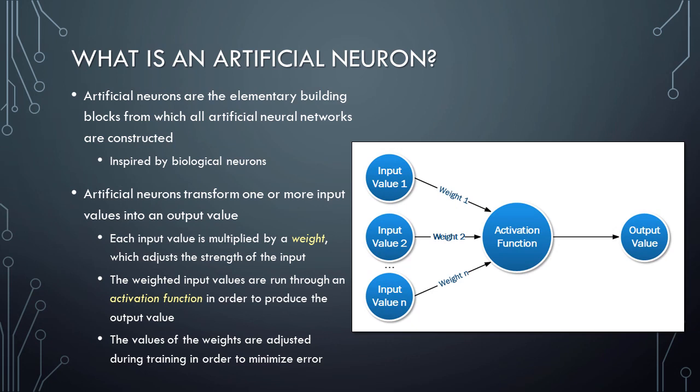Before we can understand artificial neural networks and how they work, we'll first need to learn about artificial neurons and activation functions. What is an artificial neuron? Artificial neurons are the elementary building blocks from which all artificial neural networks are built. They were first proposed by Warren McCullough and Walter Pitts in 1943 as a mathematical model of biological neurons, which form the basis of all animal brains, including the human brain. It was these biological neurons that served as the primary inspiration for the artificial neuron model.